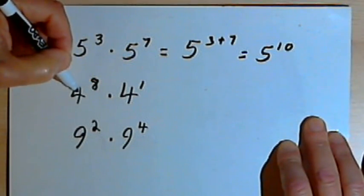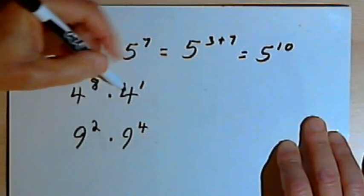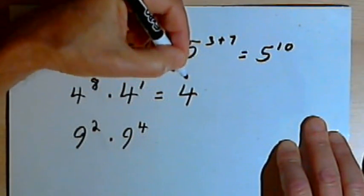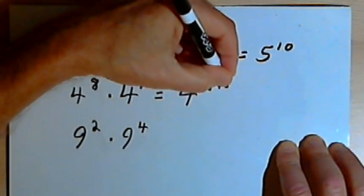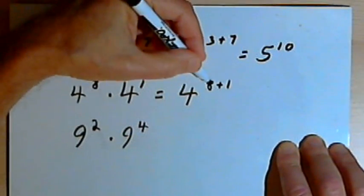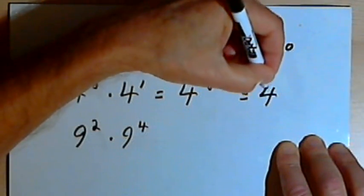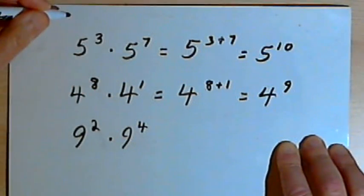So now I'm multiplying 4 to the eighth times 4 to the first. The bases are the same, so that's going to be 4 raised to the 8 plus 1. Well, 8 plus 1 is 9. So that's 4 to the ninth.